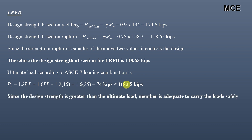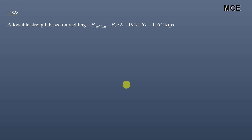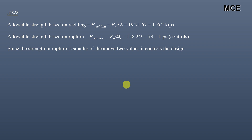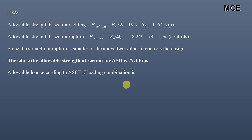For the ASD method, the allowable strength based on yielding = Pn / Ω = 194 / 1.67 = 116.2 kips. The allowable strength based on rupture = Pn(rupture) / Ω = 158.2 / 2.00 = 79.1 kips. Since the allowable strength in rupture is the smaller of the two values, it controls the design. Therefore the allowable strength for this section in ASD is 79.1 kips.